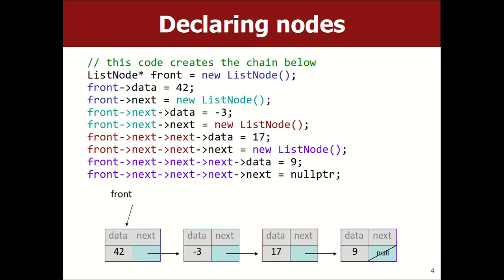Normally you only keep a pointer to the front of the list. From the front you just follow the pointers and reach all the other nodes, so a pointer to the front is good enough. It only goes one direction — if you're at a node you can't go backwards because there's no pointer back. But everything's reachable. If you want to hand somebody the whole list, you just hand them this front pointer — the memory address of the first node — and now they can look at all of it.